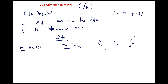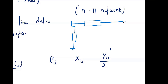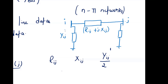To understand the nominal pi network: this is bus i and bus j, with series impedance containing resistance and reactance. Half of the shunt admittance is connected at the beginning of the transmission line and the other half is connected at the end of the transmission line.